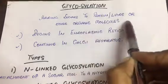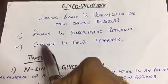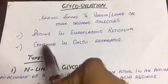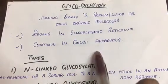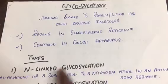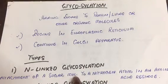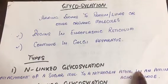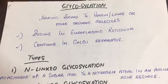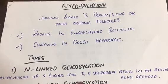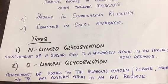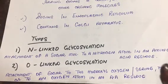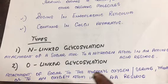The process of glycosylation continues in Golgi apparatus also. N-linked glycosylation is the attachment of a sugar molecule to a nitrogen atom in an amino acid residue. Similarly, O-linked glycosylation is attachment of a sugar to the hydroxyl oxygen in serine or threonine, or simply attachment of sugar to an oxygen atom in an amino acid residue of a protein.